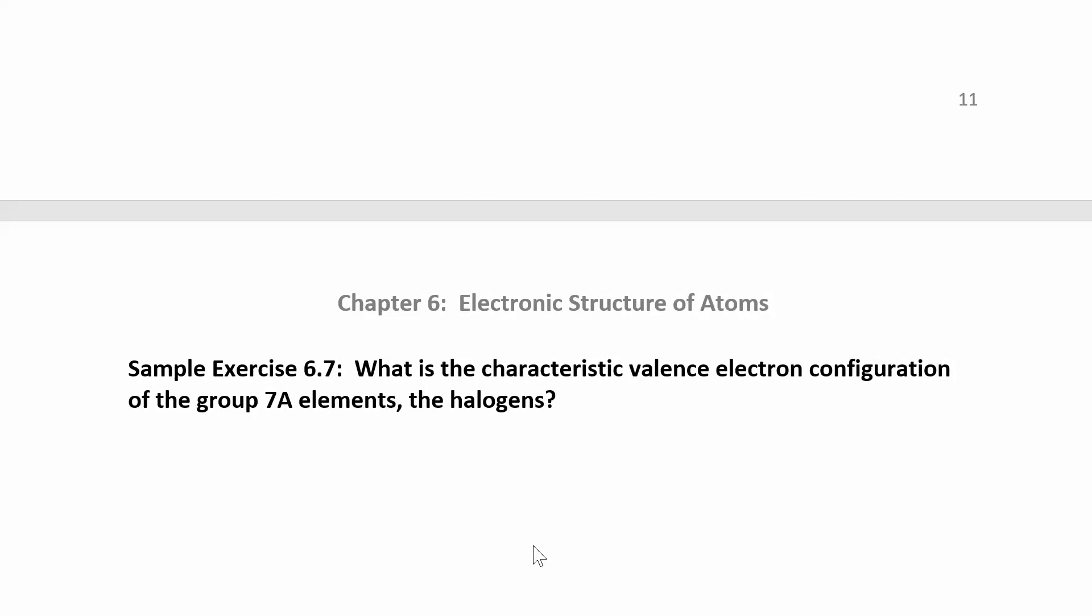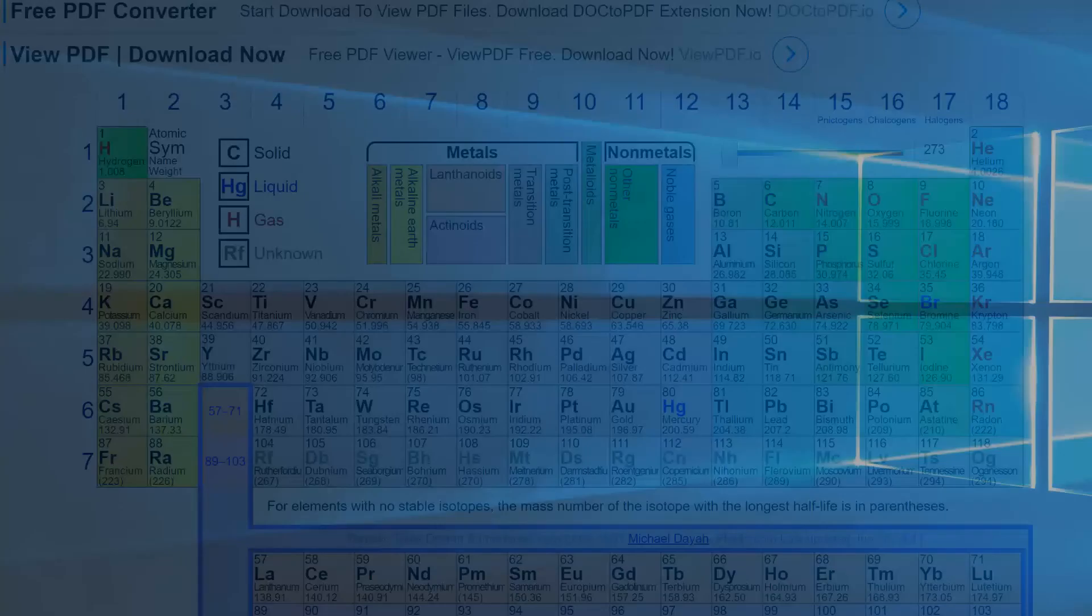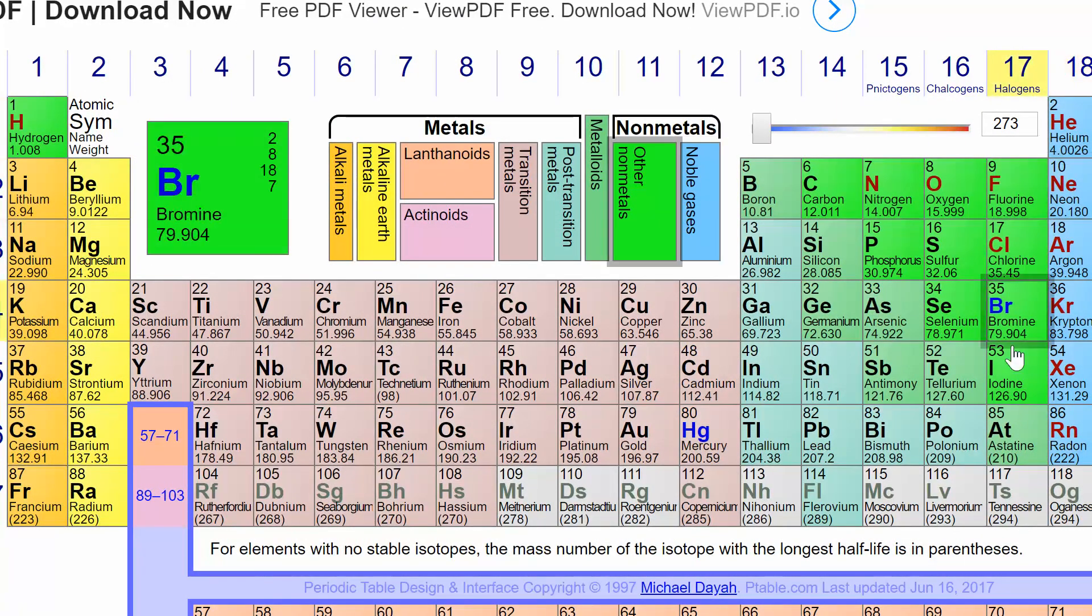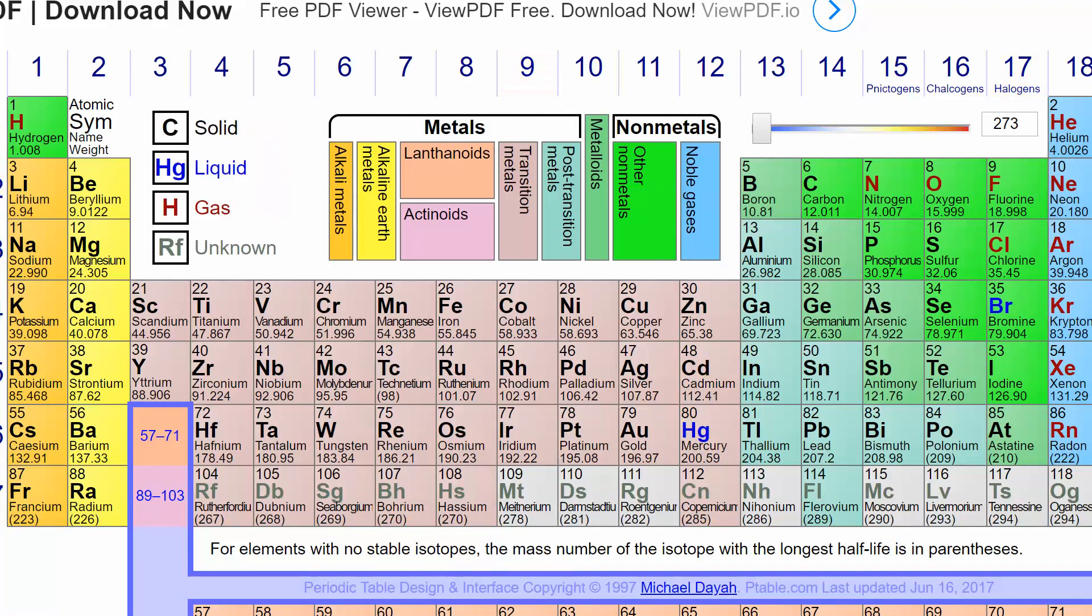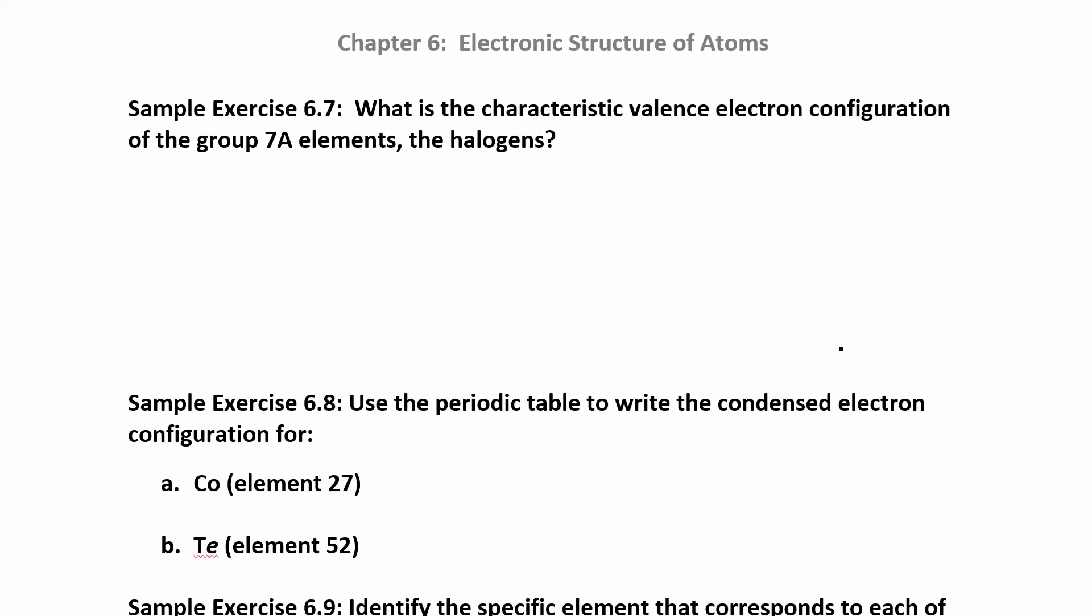Let's try a couple of these questions. What is the characteristic valence electron configuration of the group 7a, the halogens? So look over at the halogens. Halogens are here, like fluorine, chlorine, bromine, all these guys. So they're all like for fluorine. What would the electron configuration be? So 1s2, 2s2, 2p5. So let's look at fluorine. Fluorine was 1s2, 2s2, 2p5.